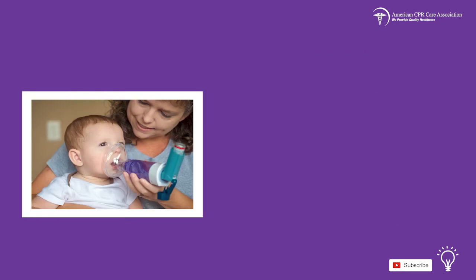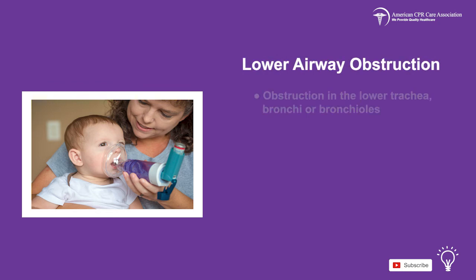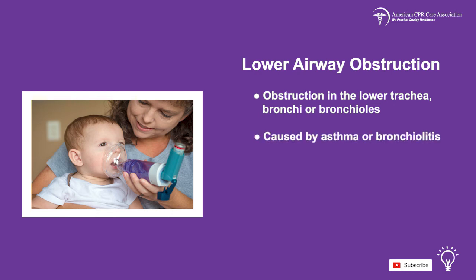Now let's talk about the second condition that can lead to respiratory distress and failure in a child, which is a lower airway obstruction. This can be an obstruction in the lower trachea, bronchia, or bronchioles, and is caused by asthma or bronchiolitis.